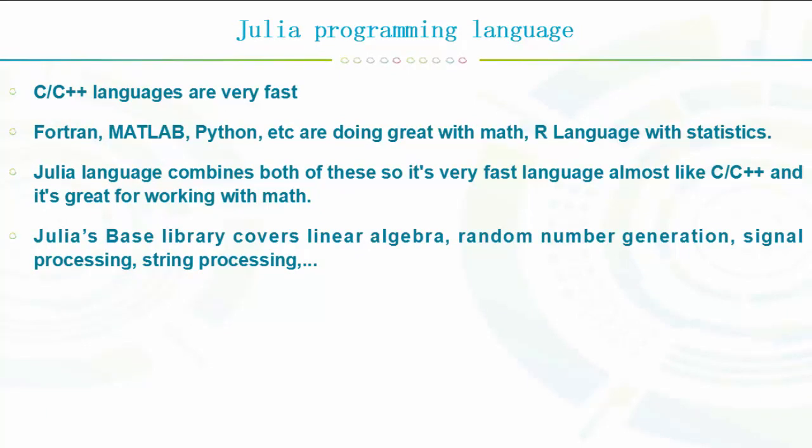Julia language is very fast like C and C++, and on the other side it's great for working with math. Julia has a base library which covers linear algebra, random number generation, signal processing, string processing, and much more.